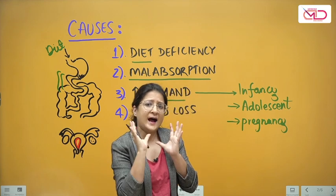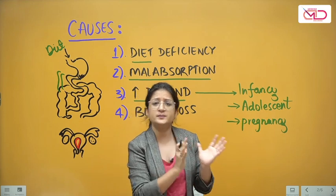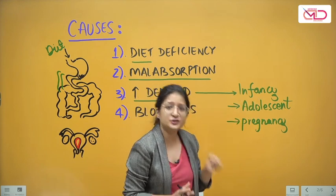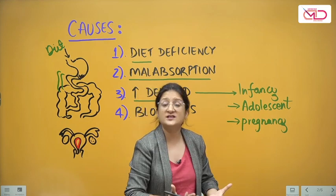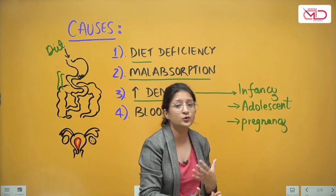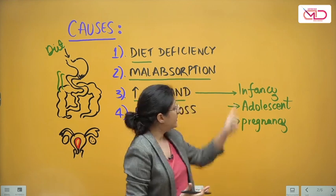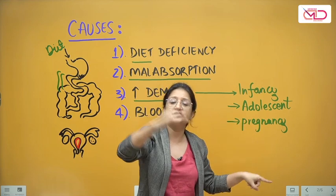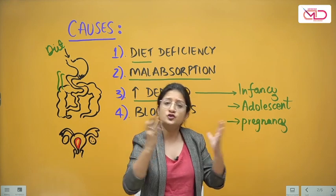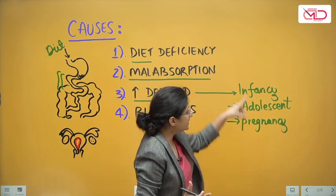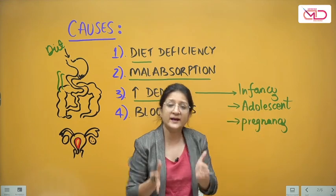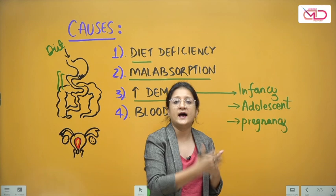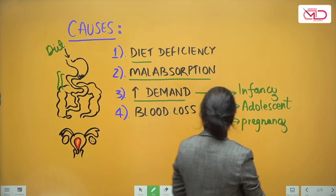Iron deficiency is a condition that perpetuates with time. Children born to poor socioeconomic conditions, whose mothers are not able to breastfeed or wean the infant properly or provide good dietary sources, have compromised iron stores. When that infant reaches adolescence, the stores are further compromised. Those adolescent girls entering pregnancy have pre-existing deficient stores, and that is how this problem persists and perpetuates.